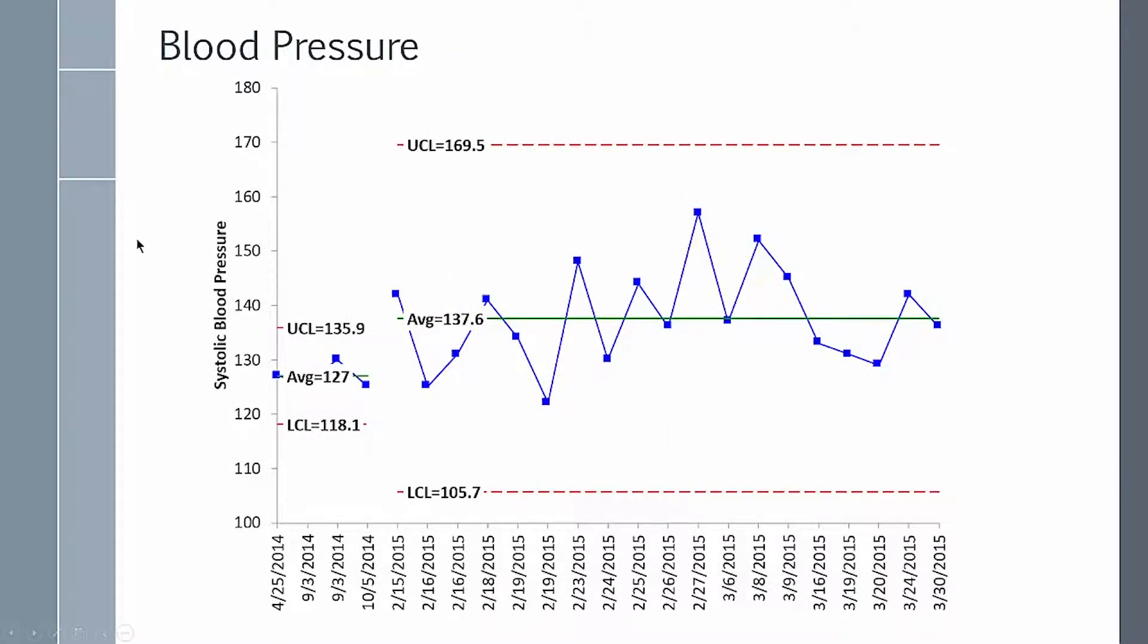You can also monitor things on your own health, like blood pressure and weight. Here's some data on my blood pressure back from 2014. I had some baseline data about 127. About a year later, I took some data in 2015. And you can see it's a step change from 127 to 137. That's another application of control charts.